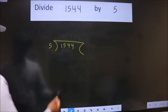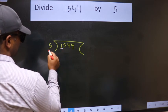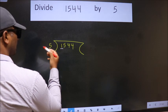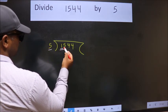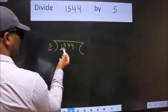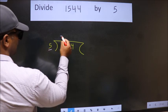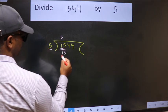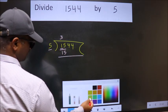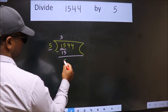Next, here we have 1, here 5. 1 is smaller than 5. So we should take two numbers, 15. When do we get 15 in the 5 table? 5 times 3 is 15. Now, we should subtract. We get 0.